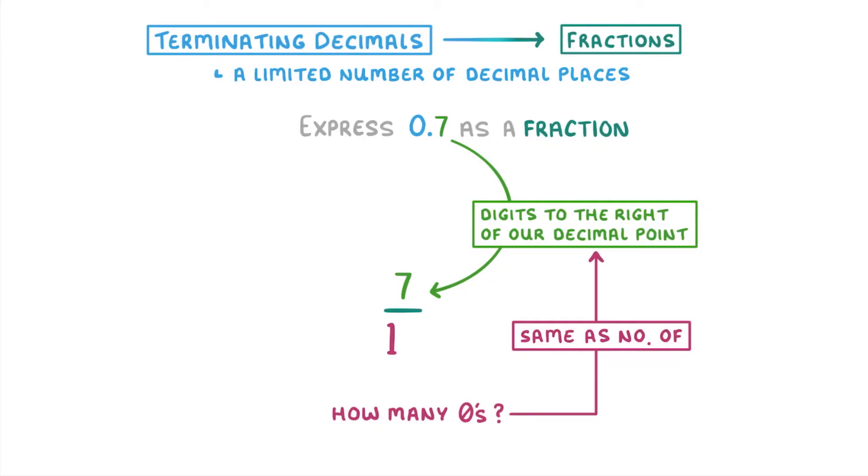So here, with 0.7, we have just the 7 after the decimal point, so one digit. And that means we're going to put a single 0 after our 1, making our denominator 10. So our fraction is just 7 over 10.